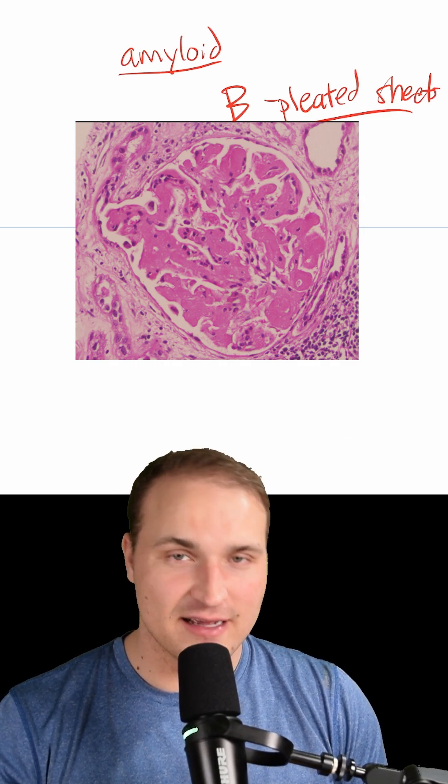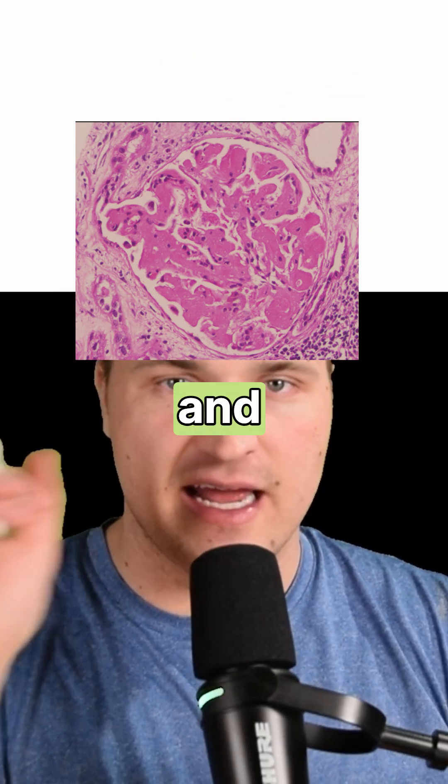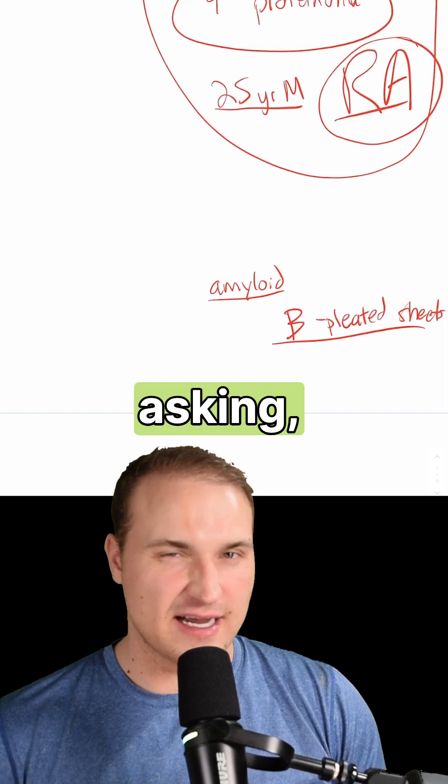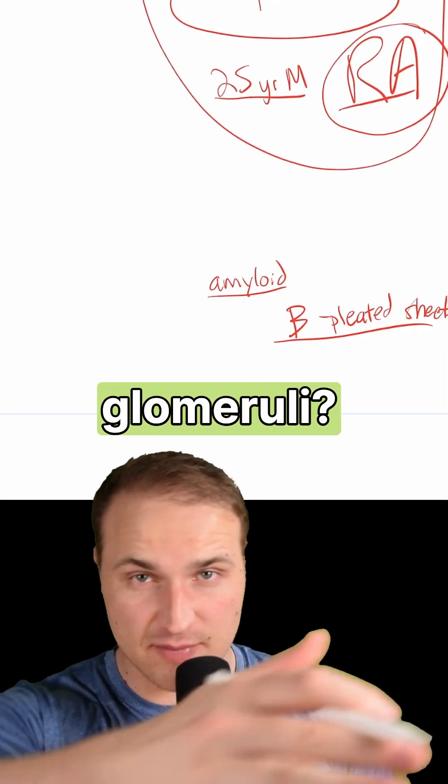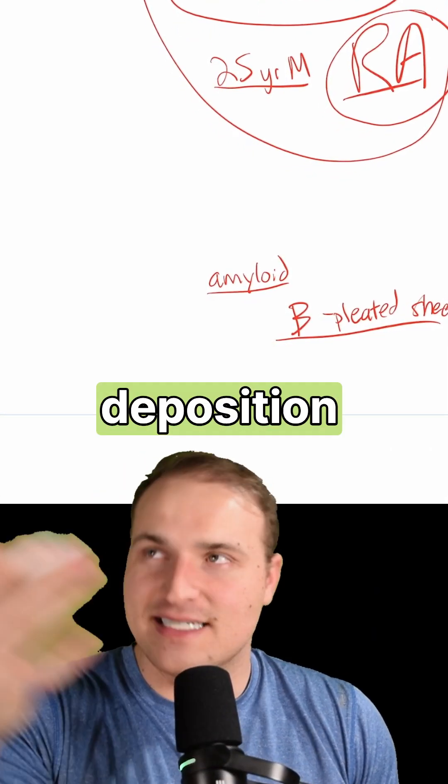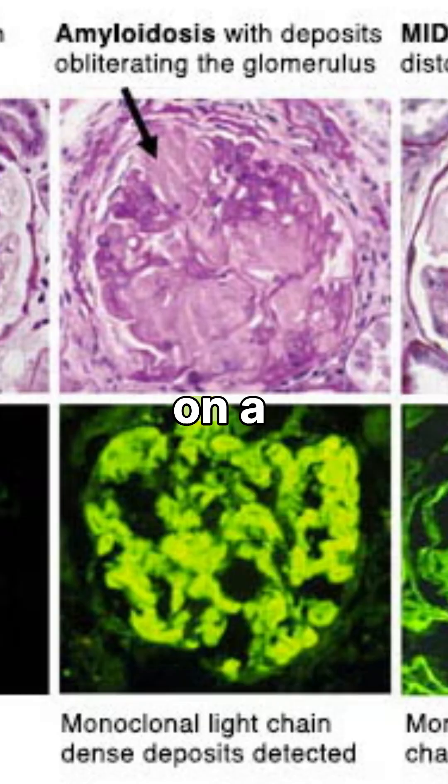On light microscopy, amyloid appears as amorphous, eosinophilic—pink—and structureless material. If they're asking what this looks like in the glomeruli, the answer is deposition of amorphous material. On Congo red staining, you'll have apple-green birefringence. I always like to say apple-green boots with the fur—if you know, you know.